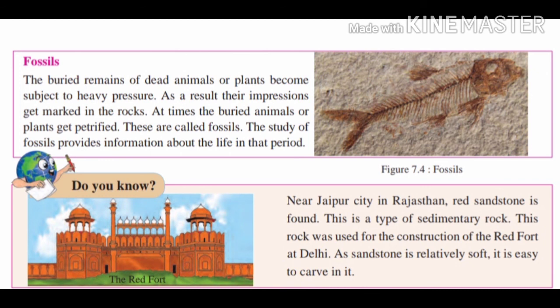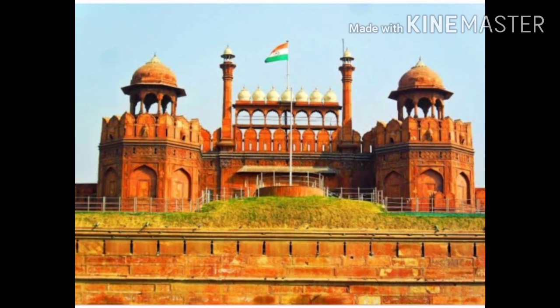The buried remains of dead animals or plants become subject to heavy pressure; as a result, their impressions get marked in the rocks. At times, the buried animals or plants get petrified — these are called fossils. The study of fossils provides information about life in that period. You might be very much aware of the Red Fort — it is built from sandstone, a type of sedimentary rock. As sandstone is relatively soft, it is easy to carve. This sandstone is found near Jaipur city in Rajasthan.